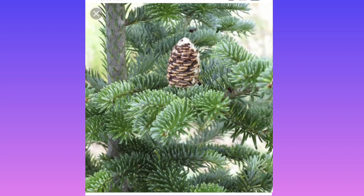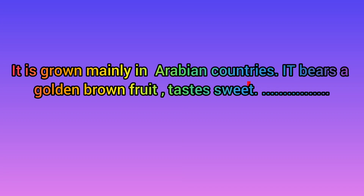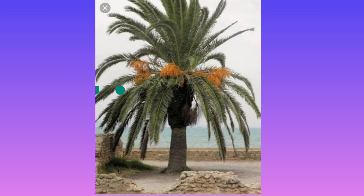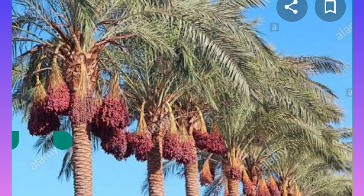Fir trees are young trees and very smooth. Third one: it is grown mainly in Arabian countries and bears a golden brown fruit that tastes sweet. What is it, children? That is the date. These plants are also used for medicines.